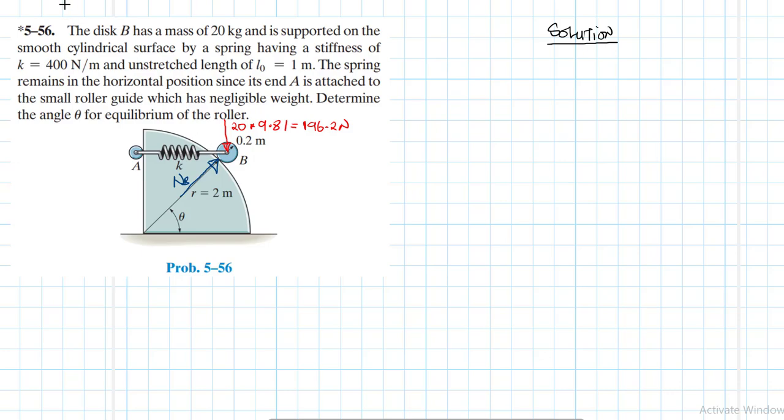Let's call this NB and NB is going to have two components. It will have one component at the center of the disk and this angle here is theta. This vertical component is going to be equal to NB sine theta.